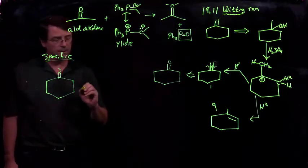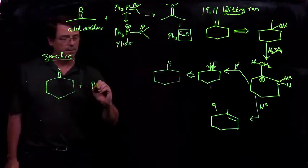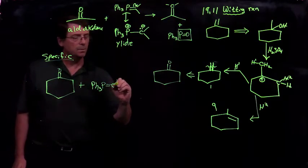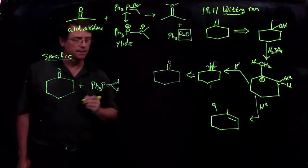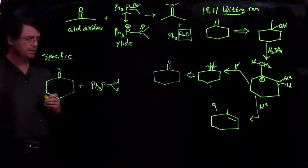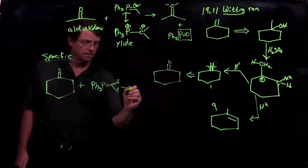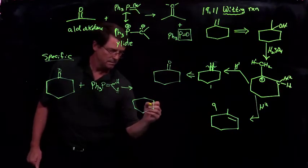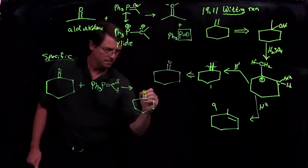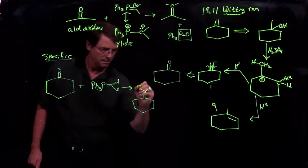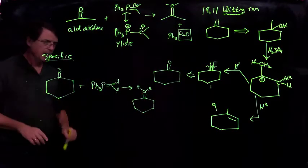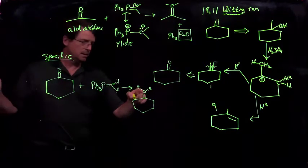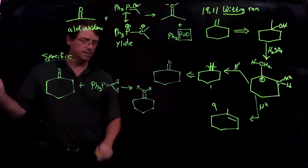We would now want to react that with the Wittig reagent that we need. And we just want the one where there are two hydrogens here. And if we do that, we'd make the alkene exclusively at the desired position. So it's only here at the desired position.